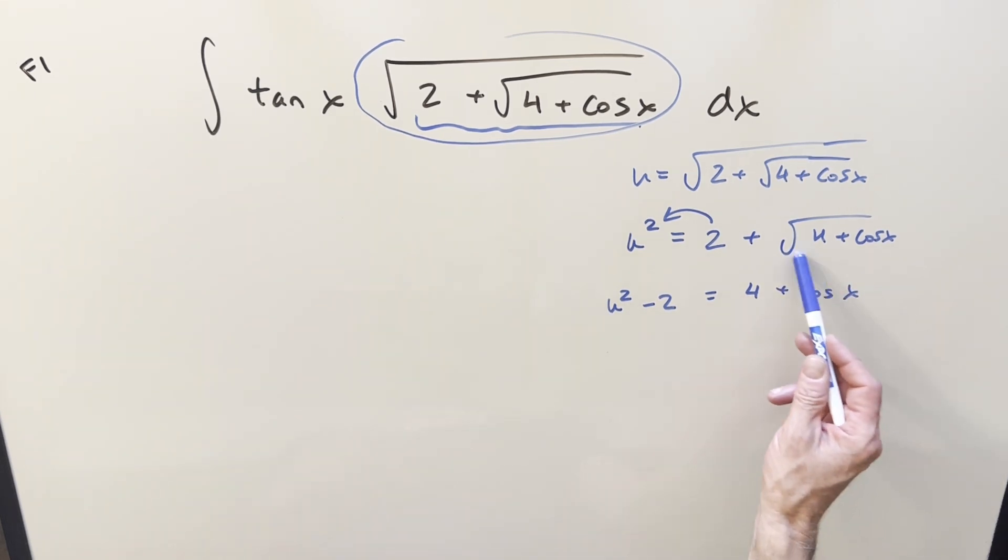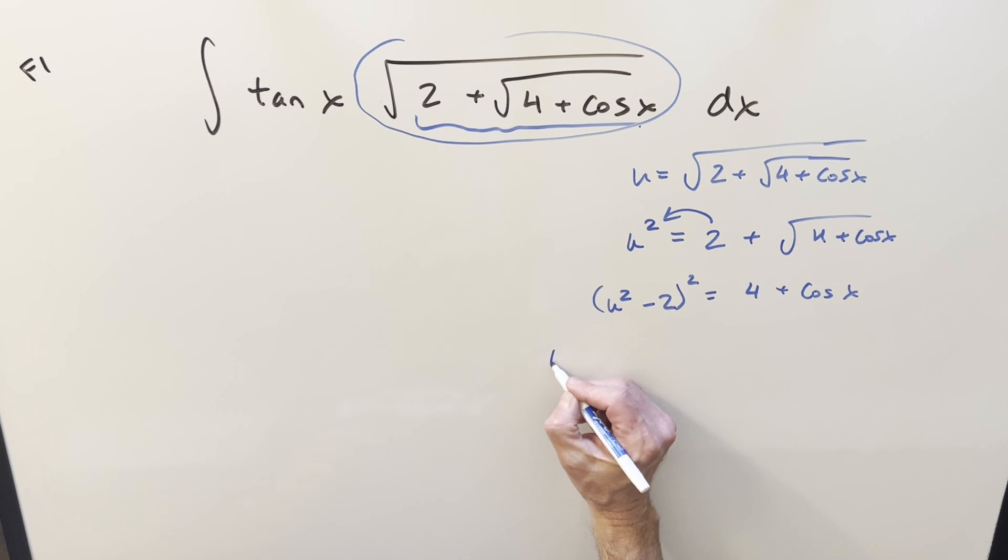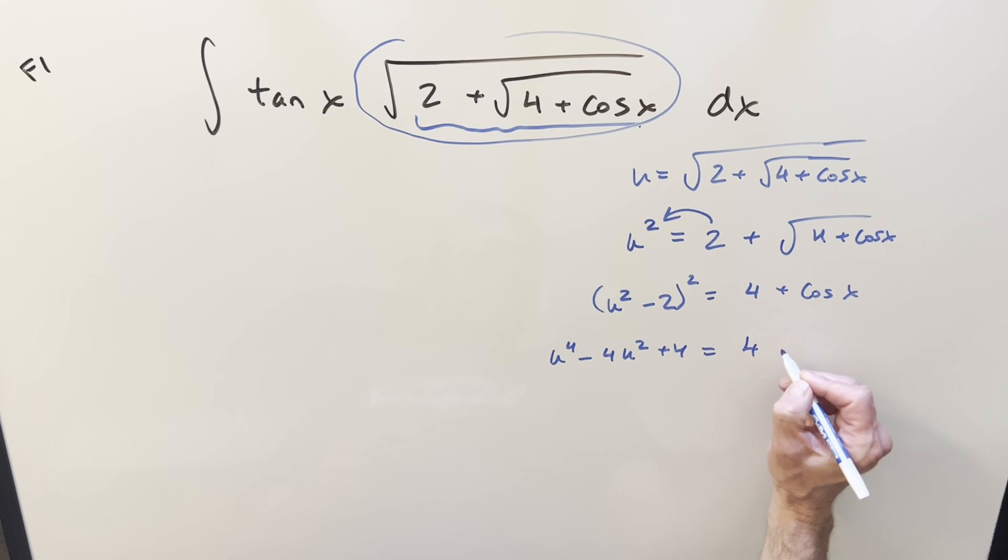We have u squared minus 2 squared equal to just 4 plus cosine x. Dropping an absolute value just because we know this needs to be positive, and plus cosine can't be less than minus 1. So now just multiplying out the left side, we have u to the 4th minus 4 u squared plus 4 equals this stuff.